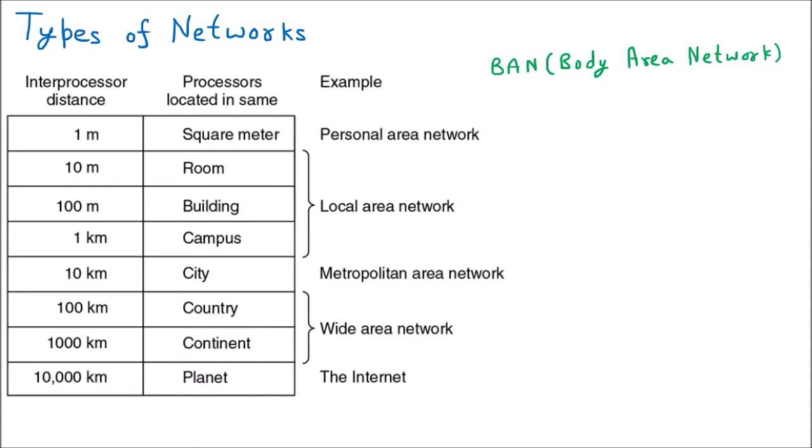If I give you some examples, you will understand what is the Body Area Network. Everybody is having smart watches today — those smart watches which you are wearing on your hands and they are connected to some devices and touching your body. Second one is medical devices — ECG devices or any other devices which monitor your heartbeat, those medical devices which you wear sometimes in the medical room.